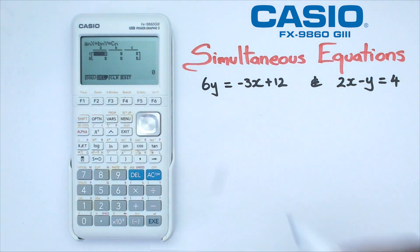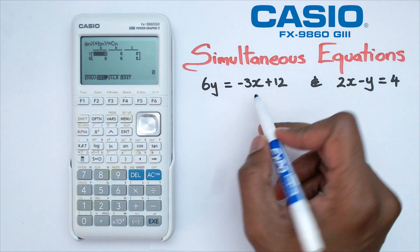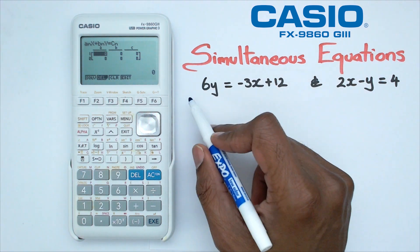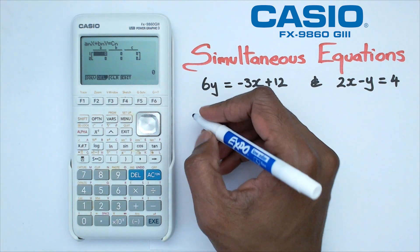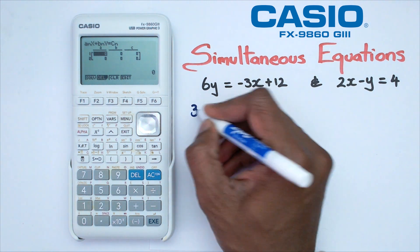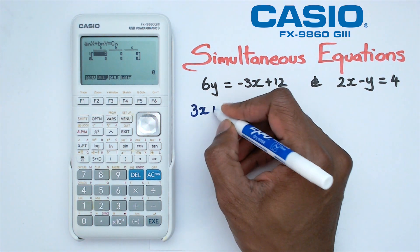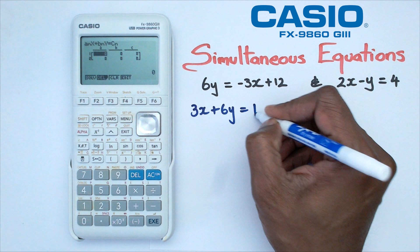So we're going to rearrange this particular equation and we're going to bring negative 3X to the left-hand side. It will become positive 3X. So my equation then would be 3X plus 6Y equals 12.